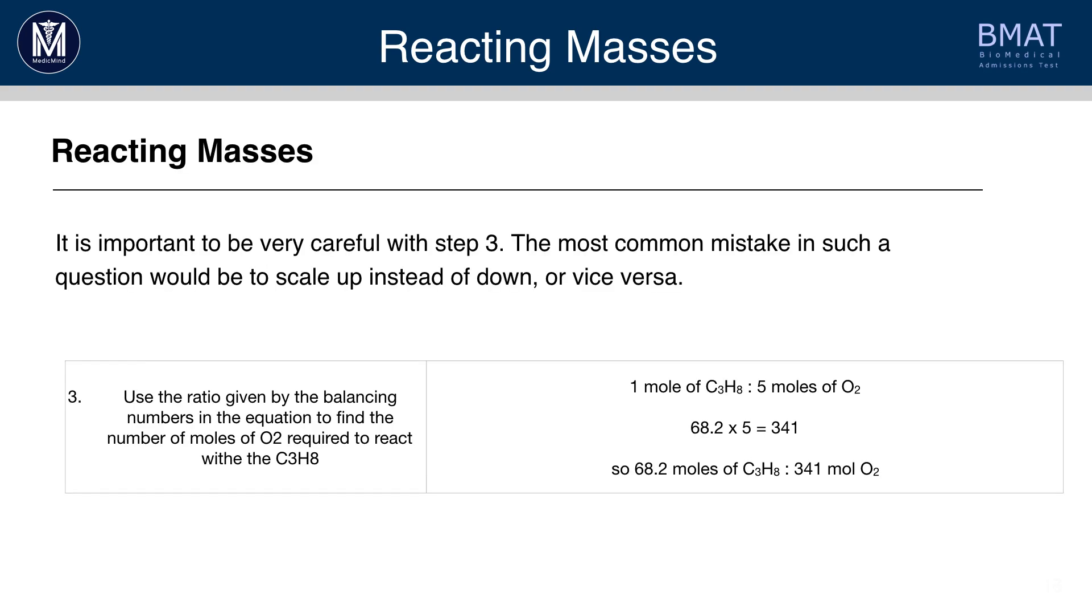For this question, you have to be very careful with step three. You can see that the ratio of propane to O2 is 1 to 5. Be careful to multiply 68.2 by 5, not divide. BMAT candidates often make mistakes by going the wrong way with this conversion.